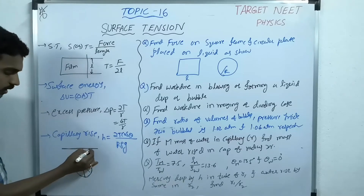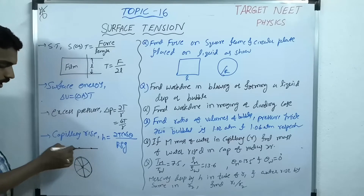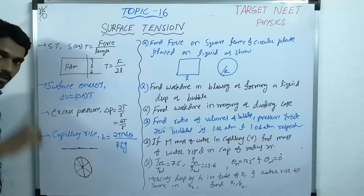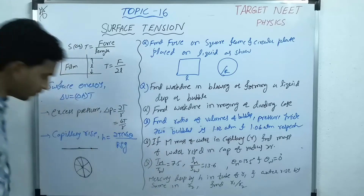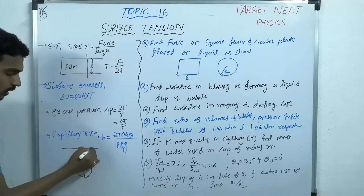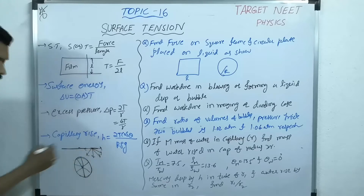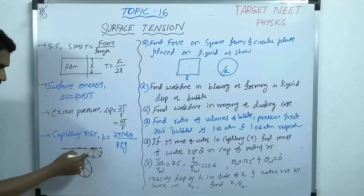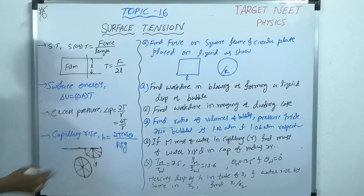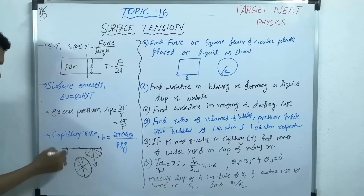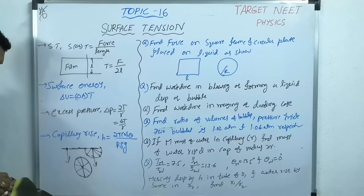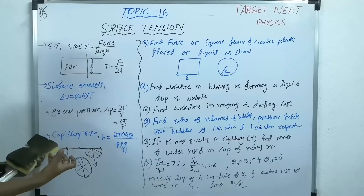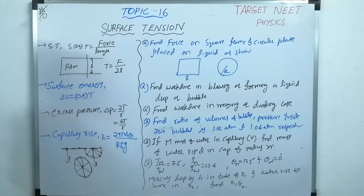A molecule that is completely inside the liquid will get forces in all directions equally, so the resultant force is zero — it will be in equilibrium. But if you consider one molecule on the top surface, it gets force only within the liquid, because there is air outside. So the resultant of all these forces is downward. Every molecule on the surface gets a resultant force downward.